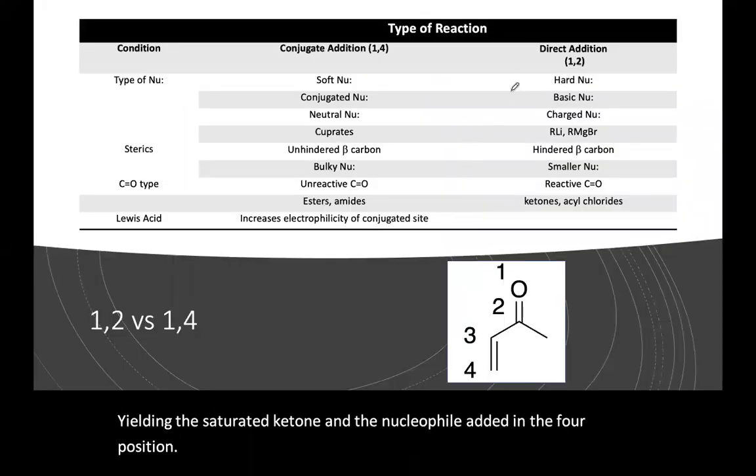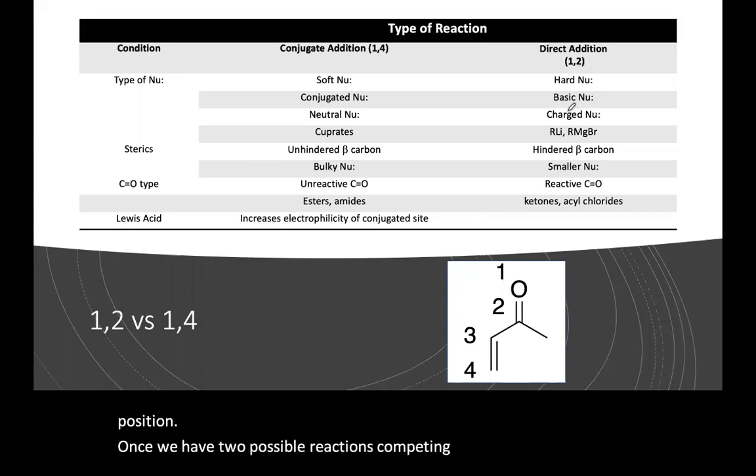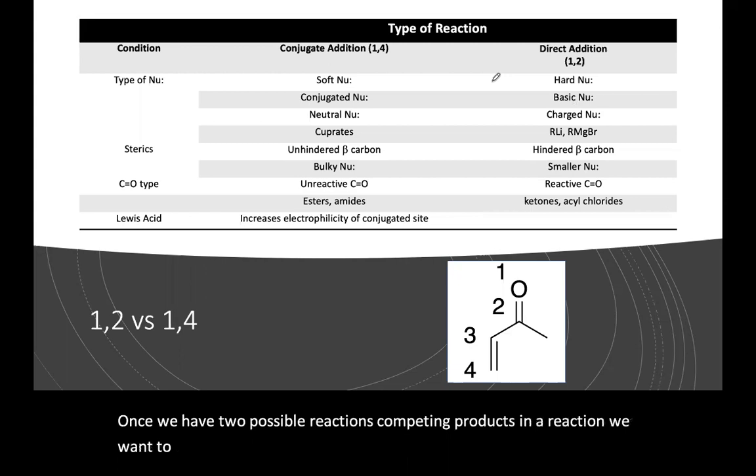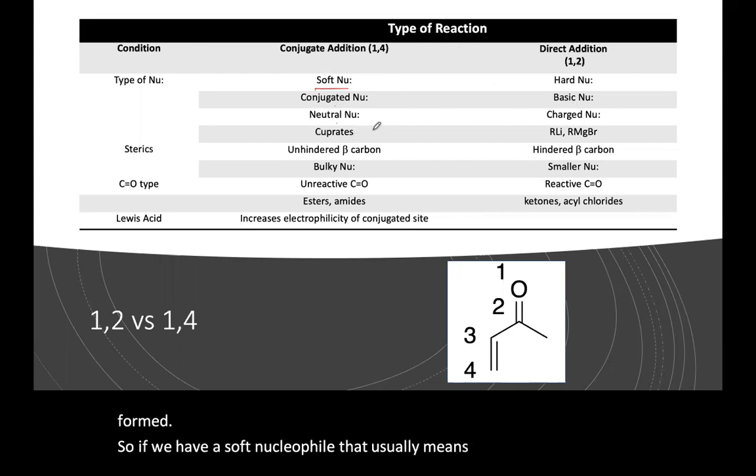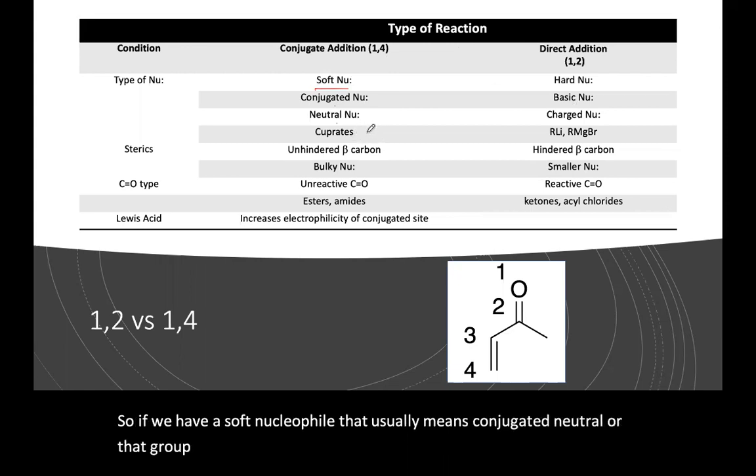Once we have two possible reactions, competing products in a reaction, we want to know how we can control this and choose which product will be formed. So if we have a soft nucleophile, that usually means conjugated, neutral, or cuprate that we just saw, we will get 1,4 addition.